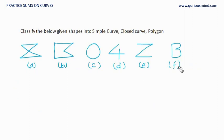Let's do the next one. Classify the below given shapes into simple curve, closed curve, and polygon. So let us write here: simple.